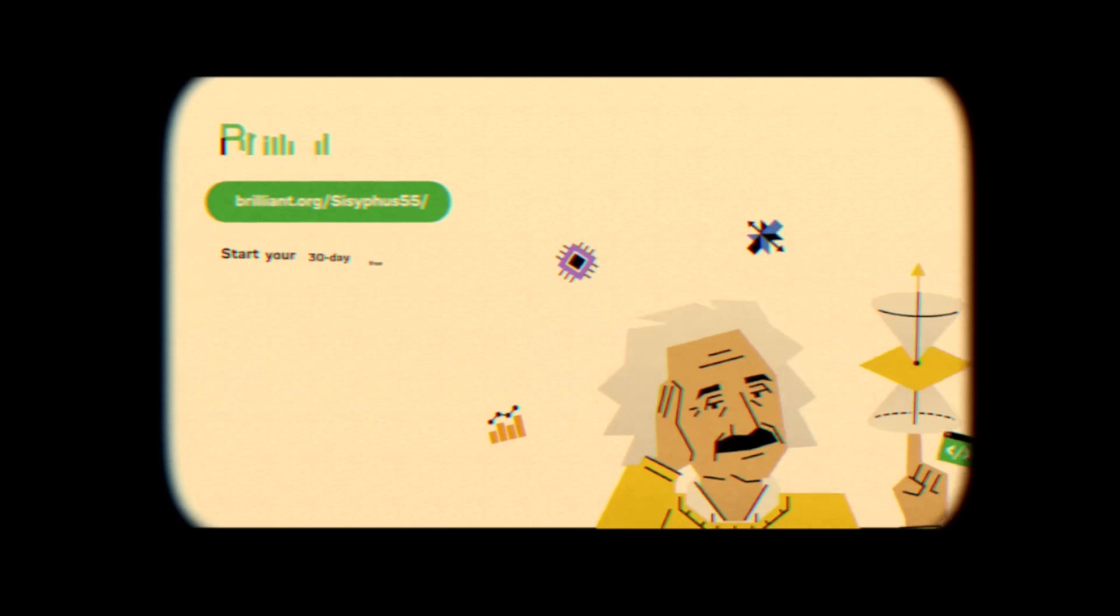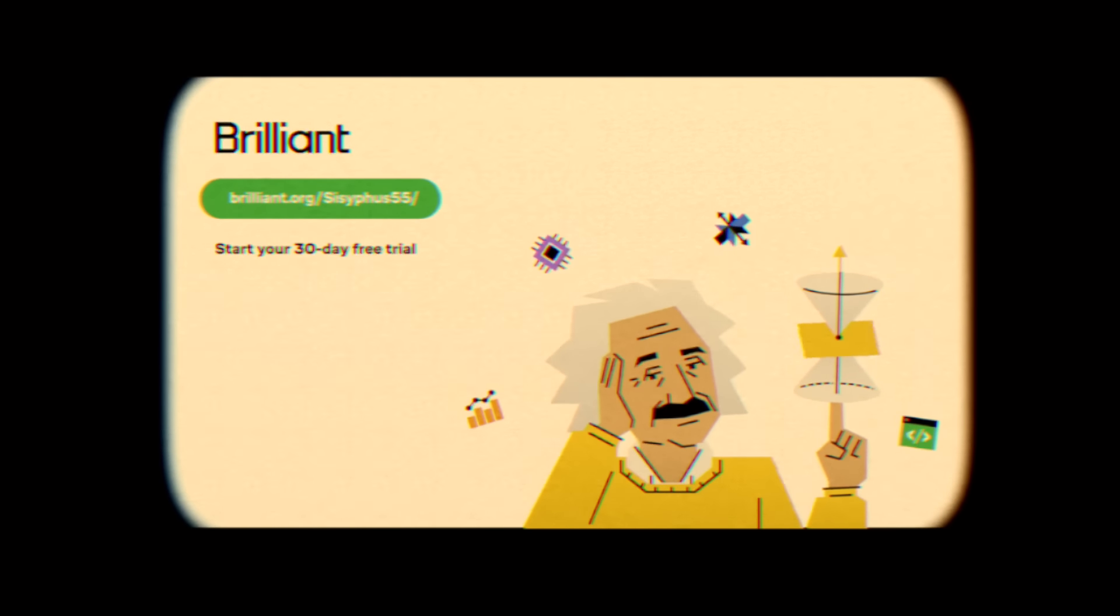To try everything Brilliant has to offer for free for a full 30 days, visit brilliant.org slash sisyphus55 or click on the link in the description. You also get 20% off an annual premium subscription.